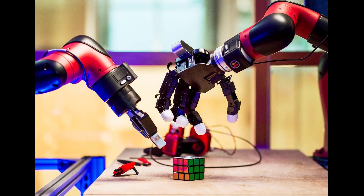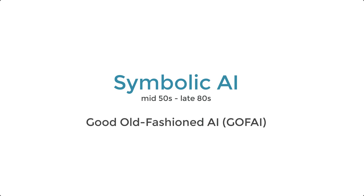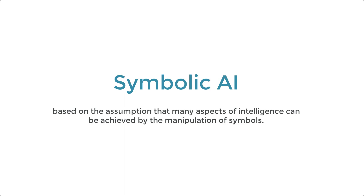But first, you must know that for several decades, since the mid-1950s up to the late 1980s, AI systems were implemented using symbolic reasoning. This is also known as good old-fashioned AI, or GOFAI. The terms classical AI and rule-based AI are also used interchangeably. This approach is based on the assumption that many aspects of intelligence can be achieved by the manipulation of symbols.